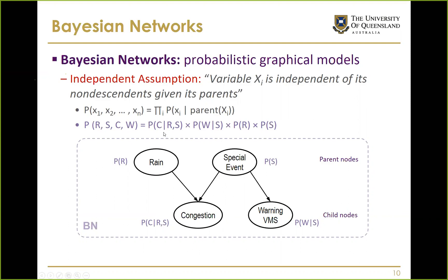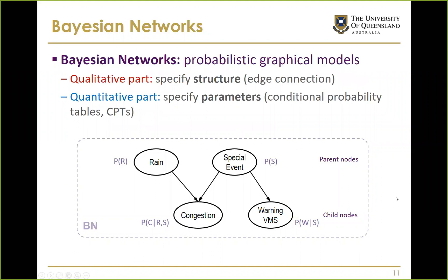In our example, if we want to represent the joint probability of all four variables, by decomposing it into child and parent node pairs we can represent it as: probability of congestion given its two parents, probability of warning VMS given its one parent, and marginal probabilities for the root nodes with no parents.